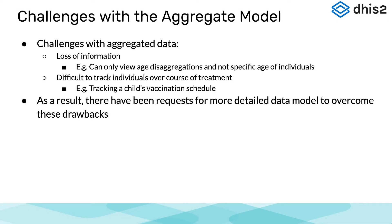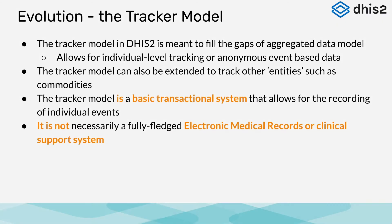We can note some challenges associated with collecting and using aggregated data. A major drawback is loss of information. For example, only being able to view data on specific predefined age groups rather than any potential age. It also makes tracking individuals through a treatment course difficult. A great example of this is comparing vaccination data. In an aggregate system, we can calculate vaccine coverage, but we are unable to track a single child through their vaccination schedule, ensuring they are fully immunized. With these challenges in mind, a lot of institutions have been requesting a more detailed data model, and that request has translated into a lot of improvements in the events and tracker module in DHIS2.